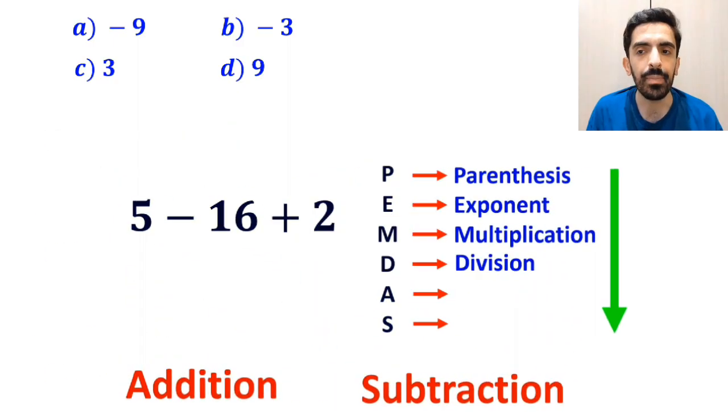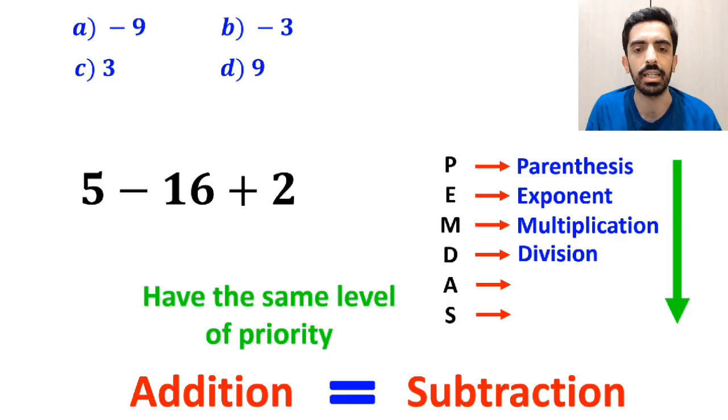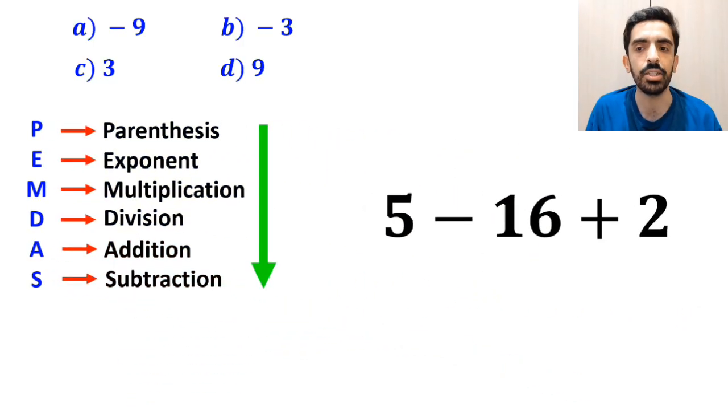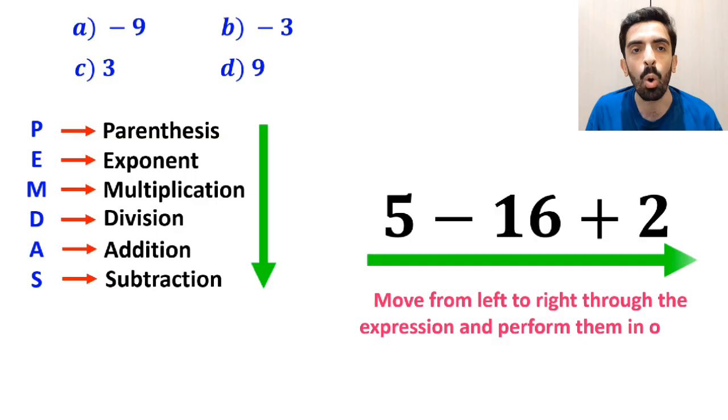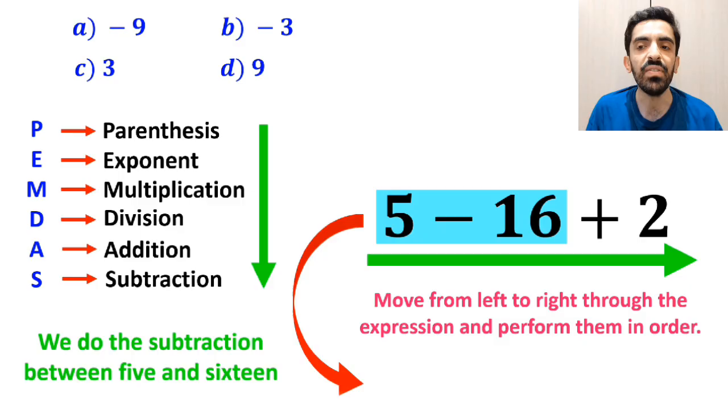Once again, we should remember that addition and subtraction also have the same level of priority. The best thing to do here is to move from left to right through the expression and perform them in order. So, first we do the subtraction between 5 and 16, which simplifies the expression to negative 11 plus 2.